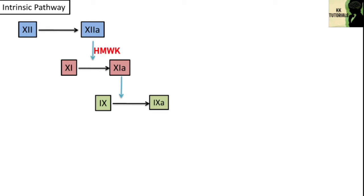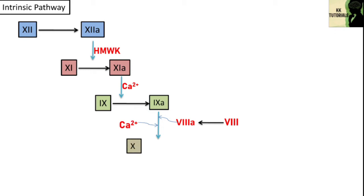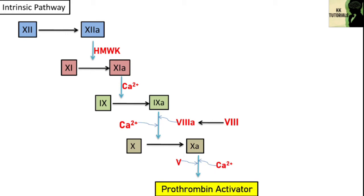These reactions require cofactors such as high molecular weight kininogens and calcium ions. In the presence of factor 8a, this activated factor 9 combines with calcium ions and causes the activation of factor 10 to factor 10a. This activated factor 10a then combines with factor 5 and calcium ions to form prothrombin activator.